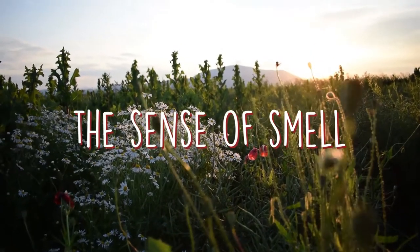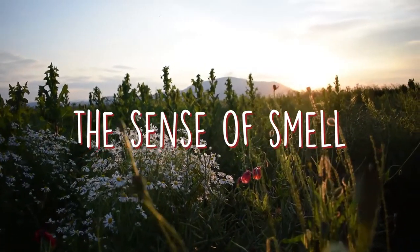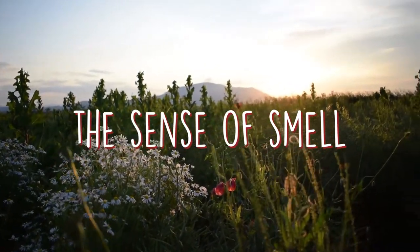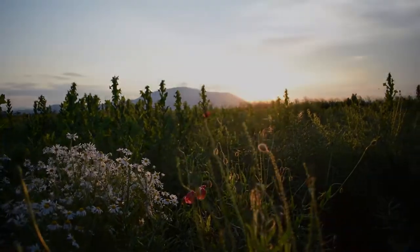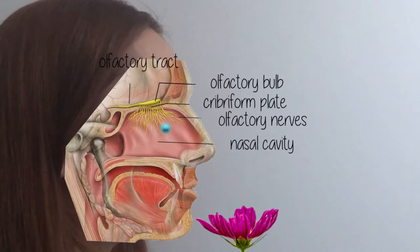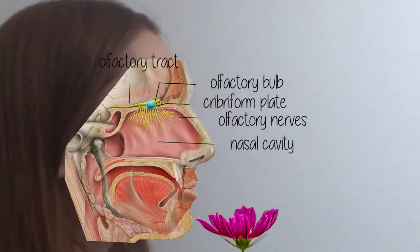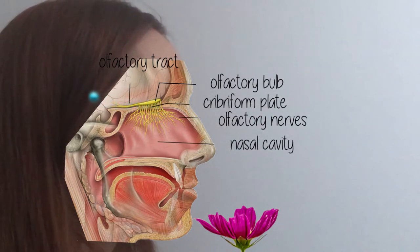The sense of smell, also known as olfaction, is produced when odorant molecules enter the nasal cavity, dissolve in the mucous lining, and reach the olfactory epithelium, where the olfactory receptor cells act as transducers, converting the information into electrical signals to send to the brain.